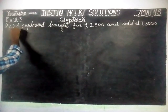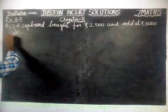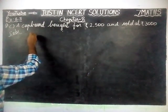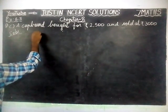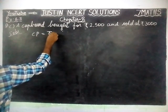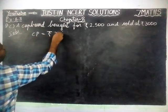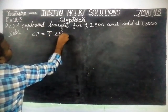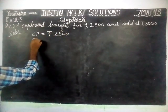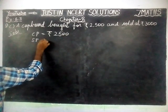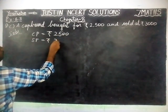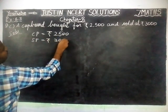First, we will write the given information. Here, CP is equal to Rs. 2500, and sale price is equal to Rs. 3000.